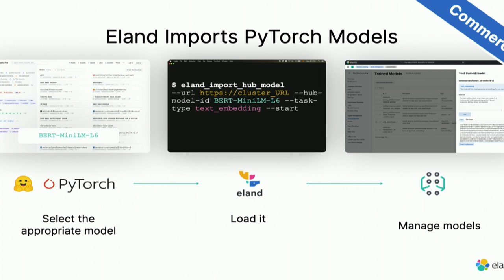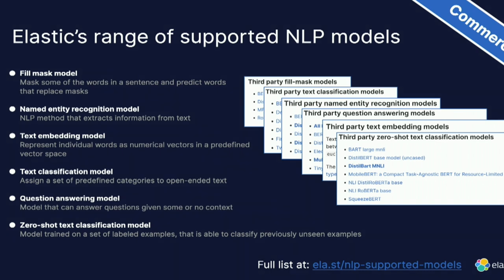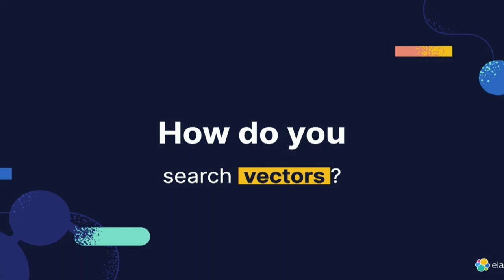We support a wide variety of NLP models for different tasks. Named Entity Recognition lets you automatically extract from text whether there's a city, location, or person. Text embedding gives you semantic representation of your text. Text classification covers things like sentiment analysis — detecting whether content is positive, negative, or expressing anger. We have a list of all supported models.